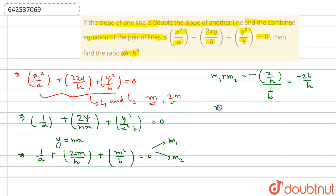The product of roots is the constant term 1/a divided by the coefficient of m², which is 1/b. This equals b/a. So we have sum of roots = -2b/h and product of roots = b/a.